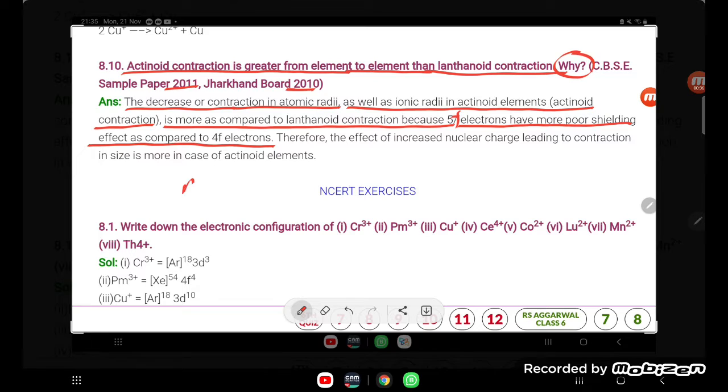So in actinoids, what are there? If you talk about actinoids, 5F electrons are there now. In these electrons, what is there? Poor shielding effect is there.